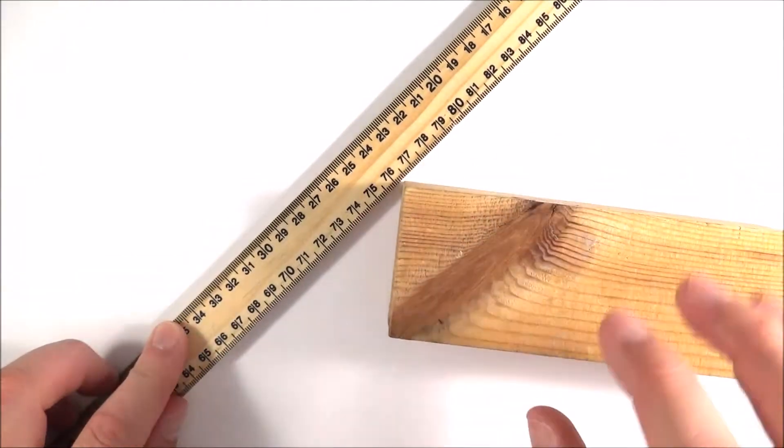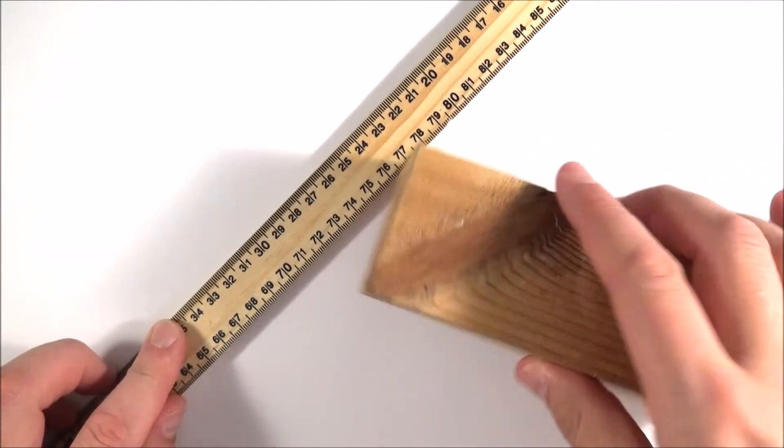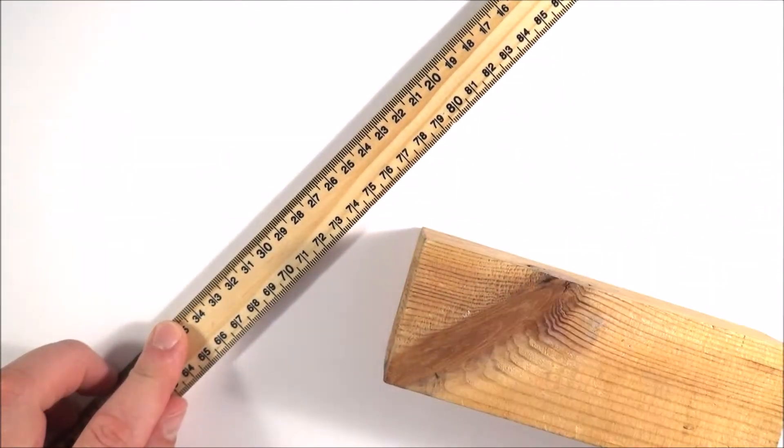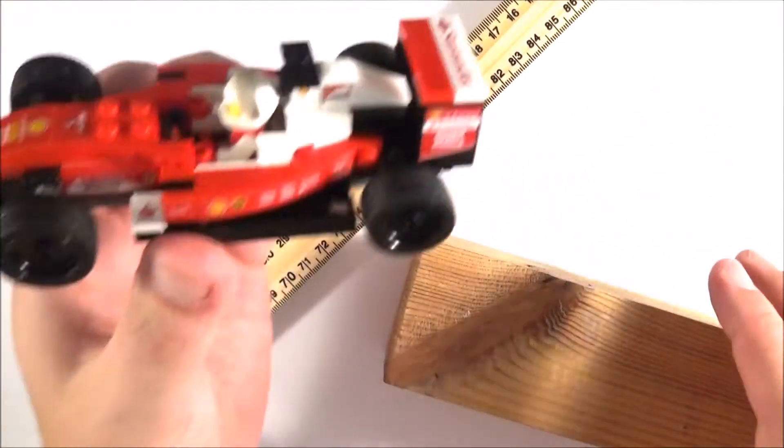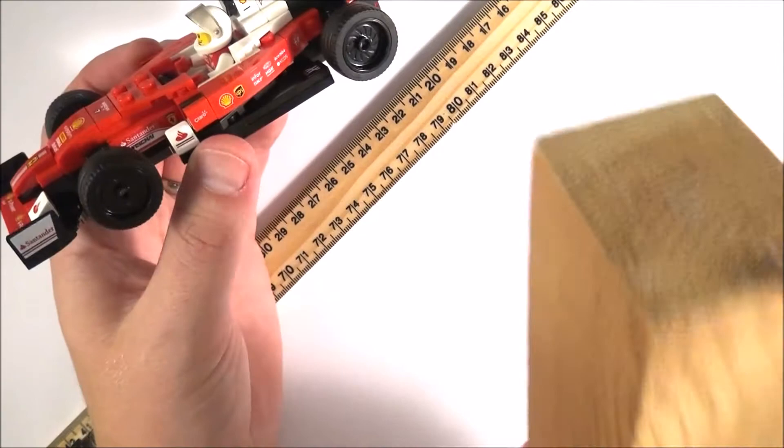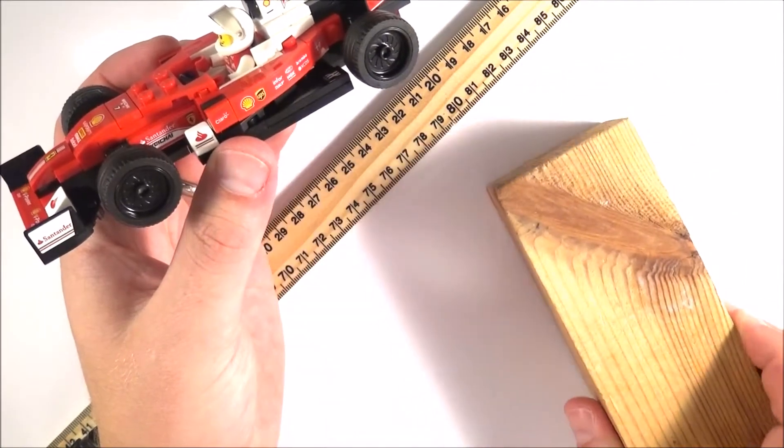But actually what we can do is some quite good analysis of this and we can use a block of wood to maybe model something like a racing car. What we can look at is how the initial velocity of this block of wood affects the distance that it takes to stop.